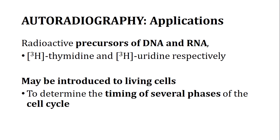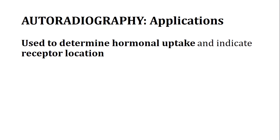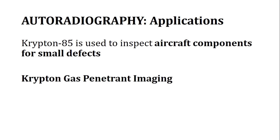To analyze the phases of the cell cycle, we can use H3 thymidine. We can also use P32, P33, or S35 — all radioactive isotopes — to detect the presence of these elements in DNA. Additionally, hormonal uptake can be studied through this procedure.